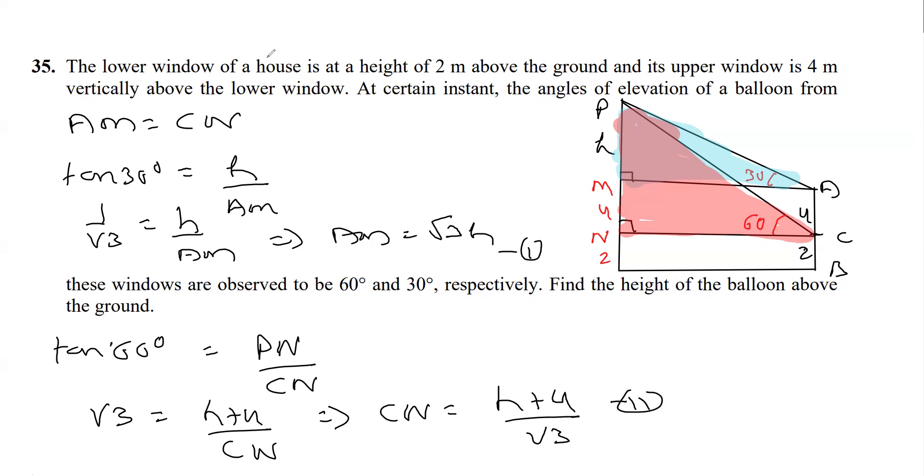Say equation 2. What we know from the first step is that AM is equal to CN, so we can equate these two. On equating these two values: